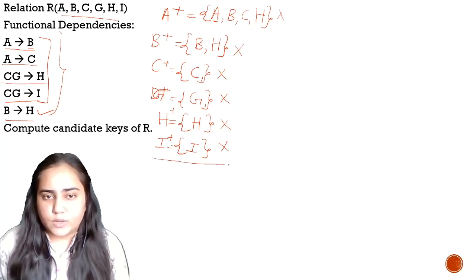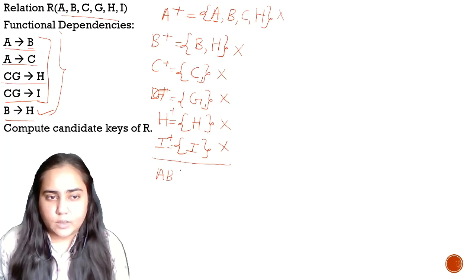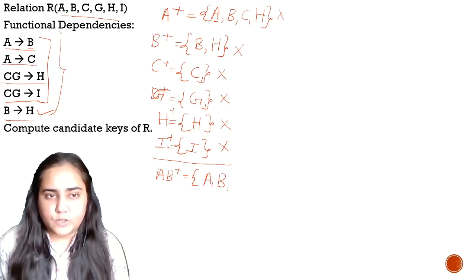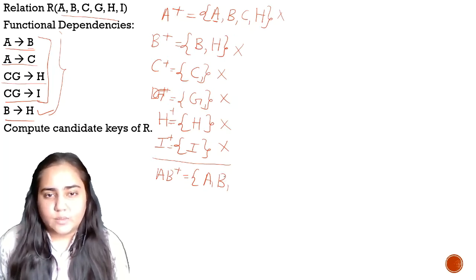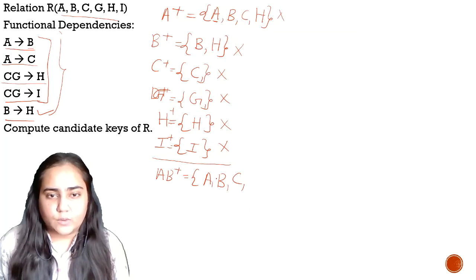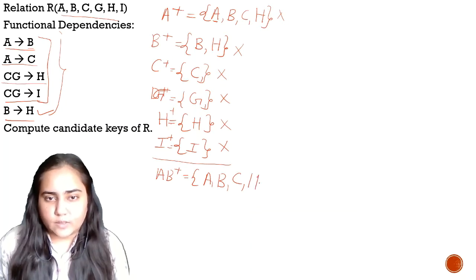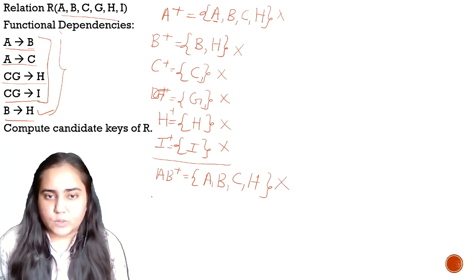Now we will take combinations of attributes. We are going to take AB-plus. When you take AB-plus, you get to add A and B. After that, checking the functional dependencies: using the first dependency I can add B, but B is already there. Using the second, I can add C. The third dependency I cannot use because I don't have G. Same for the fourth. For the fifth, I can add H because I have B. But I did not get all the attributes, so AB is not a candidate key.